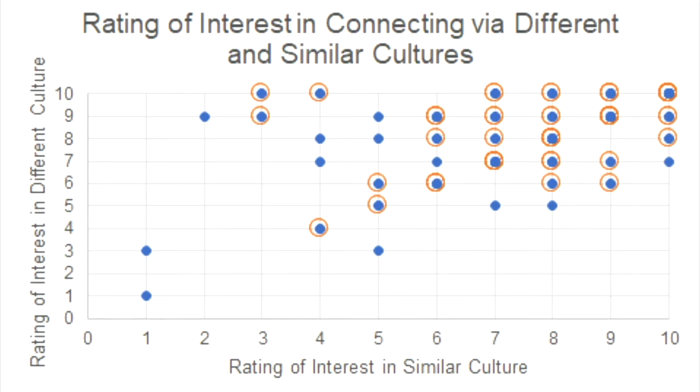When brainstorming solutions, we were very passionate about this two-pronged system: matching with people inside your culture and connecting with people outside your culture. However, we wanted to make sure there was a user base for this. In our survey, we asked people's willingness to match with people inside and outside their culture on a scale from 1 to 10. The orange dots surrounding the blue dots signify duplicate data points. As you can see, the results cluster towards the top right, showing high interest in both similar culture and different culture matching.